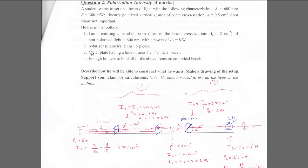Available tools: a lamp emitting a parallel beam at 600 nm, area 2 cm², non-polarized, power 8 watts; five polarizers; metal plates each with a hole of area 1 cm² (five pieces); and enough holders. So we have to polarize the beam, reduce the area, and reduce the power.